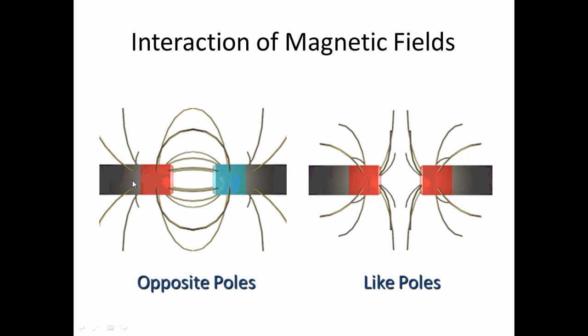Same thing happens here. These two are being pulled together. You can see the lines pulling them together, going from north to south. Then with our like poles, these happen to be two norths, you can see that the fields are pushing against each other. They don't want to interact, so they're pushing against each other, causing these to repel.